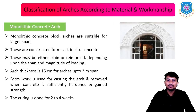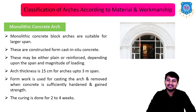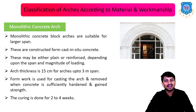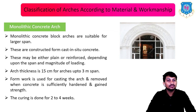The second type of concrete arch is the monolithic concrete arch, suitable for larger spans. It is constructed from cast-in-situ concrete and may be either plain or reinforced depending on the span and magnitude of loading. The arch thickness is 15 cm for spans up to 3 meters. Formwork is used for casting and removed when the concrete has sufficiently hardened. Curing is done for 2 to 4 weeks.